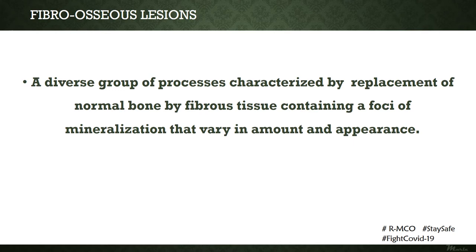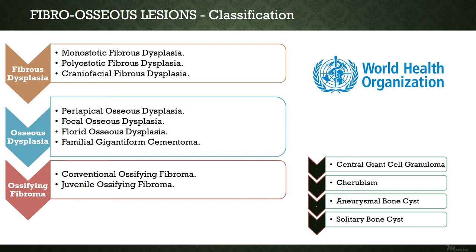Fibro-osseous lesions are a diverse group of processes characterized by replacement of normal bone by fibrous tissue containing foci of mineralization that vary in amount and appearance. As discussed earlier, these are lesions wherein the normal bone becomes defective and is gradually replaced by fibrous tissue. The WHO classification broadly categorizes them into fibrous dysplasia, osseous dysplasia, and ossifying fibroma.